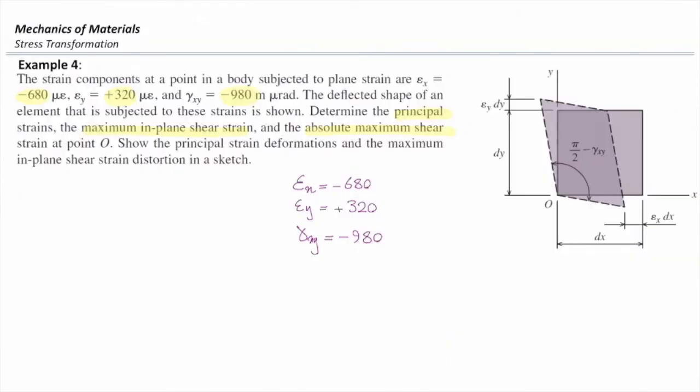The deflected shape of an element subjected to this strain is shown in this figure. The question asks, determine the principal strains, the maximum in-plane shear strain, and the absolute maximum shear strain. Epsilon x is negative 680, epsilon y is positive 320, and gamma xy is negative 980.